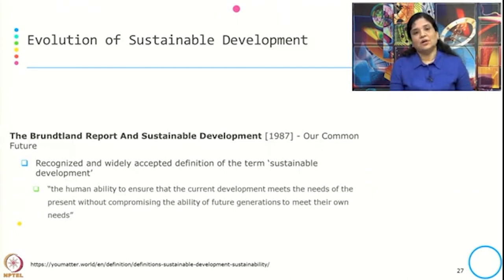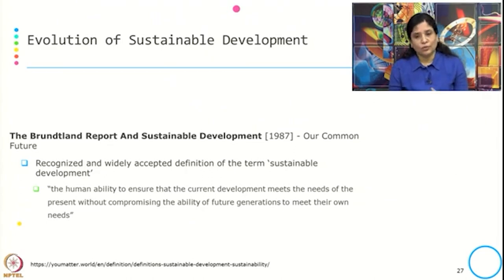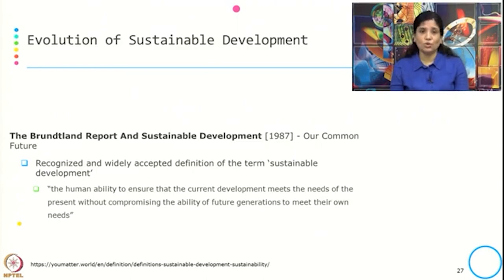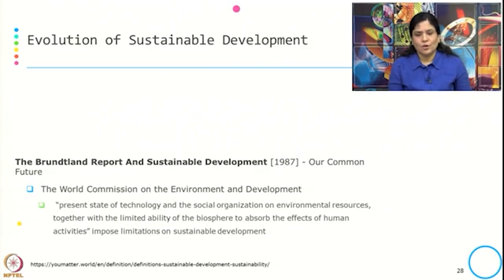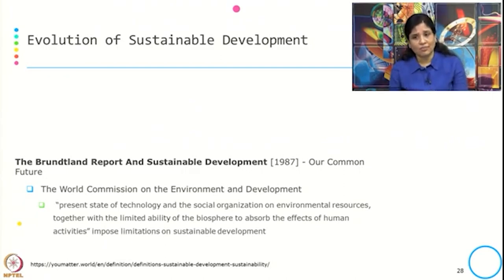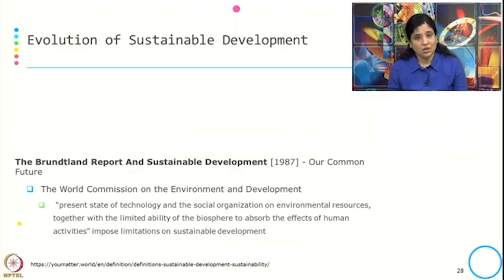Then in 1987, the most widely accepted definition of sustainable development came through the Brundtland Report — 'Our Common Future.' It defined sustainable development as the human ability to ensure that current development meets the needs of the present without compromising the ability of future generations to meet their own needs. The World Commission on Environment and Development also brought out the challenges associated with sustainable development: the present state of technology and social organization on environmental resources, together with the limited ability of the biosphere to absorb the effects of human activity, imposes a limitation on sustainable development.